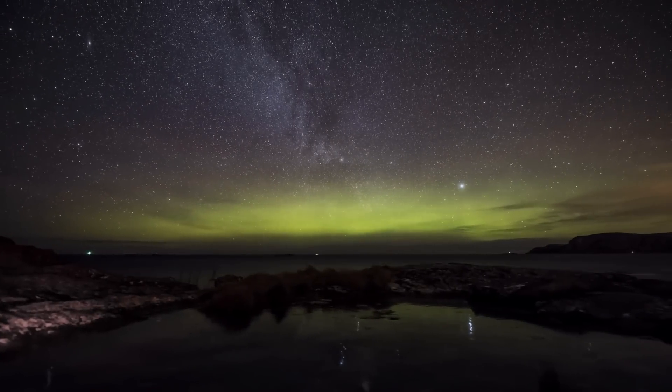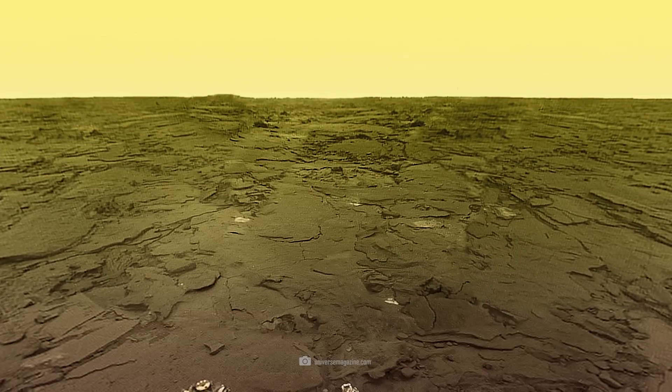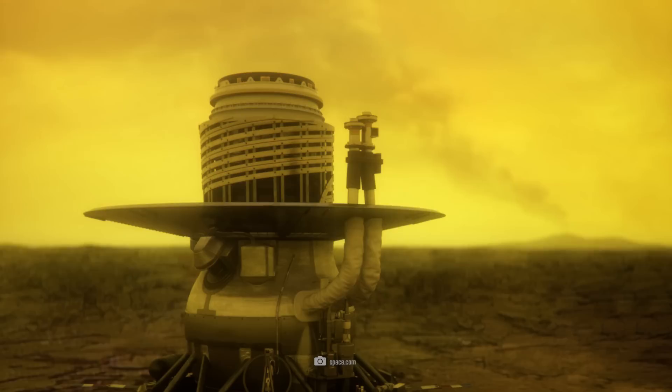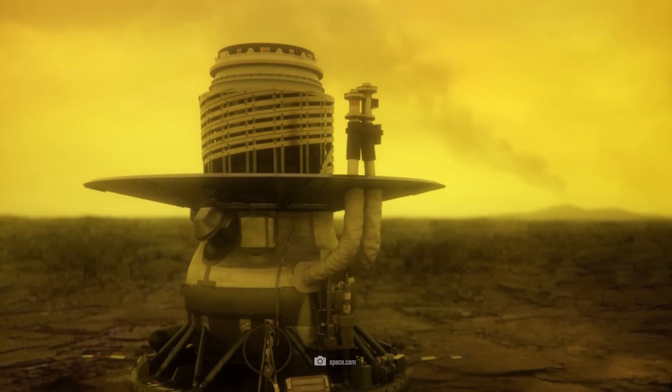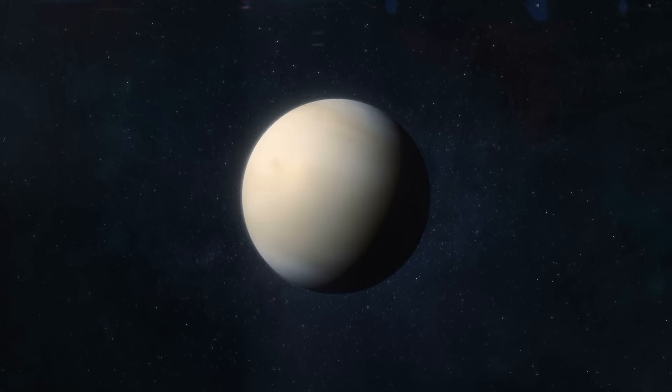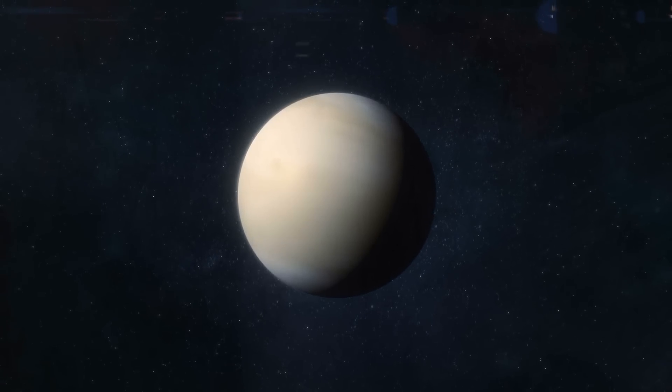Venus is very easy to reach from Earth. But since the Russians, hardly any probe has visited Earth's harsh sister. With their Venera probes, the Russians wrote space history. After that, the planet was considered largely explored and uninteresting.